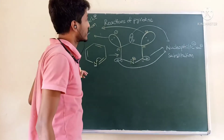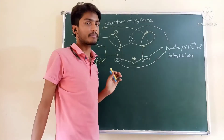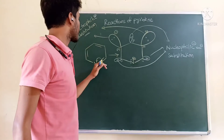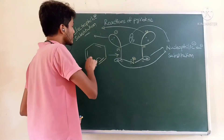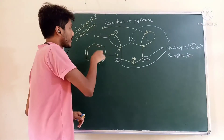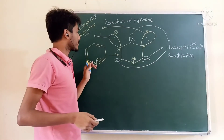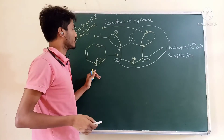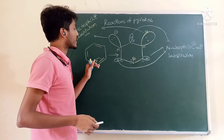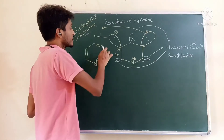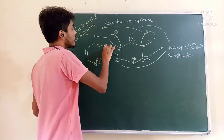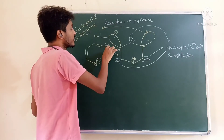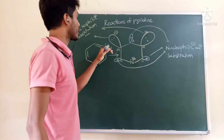Why substitution reaction? In order to preserve the aromaticity. Pyridine is an aromatic compound with continuous delocalization of pi electrons. Due to aromaticity, this compound is more stable. In order to preserve the aromaticity, substitution occurs — hydrogen is replaced by either an electrophile or nucleophile.